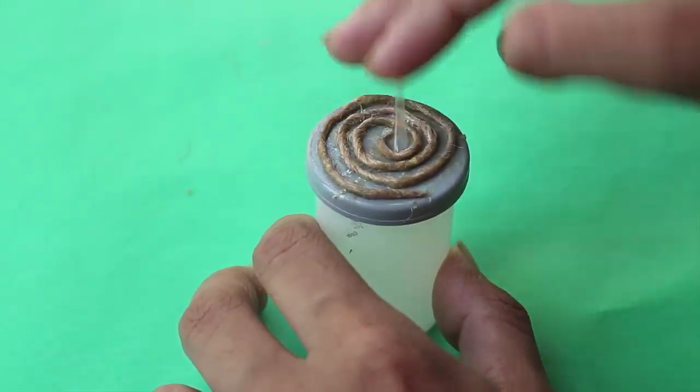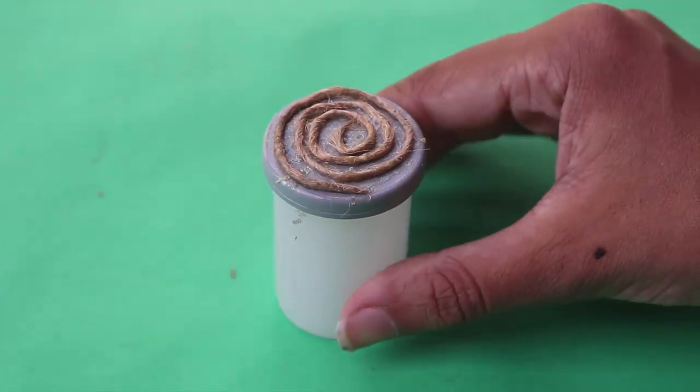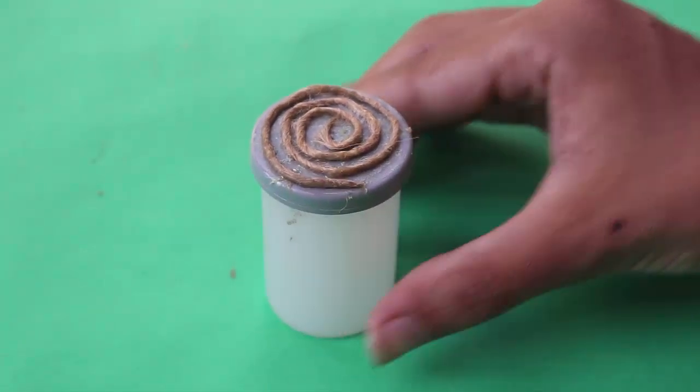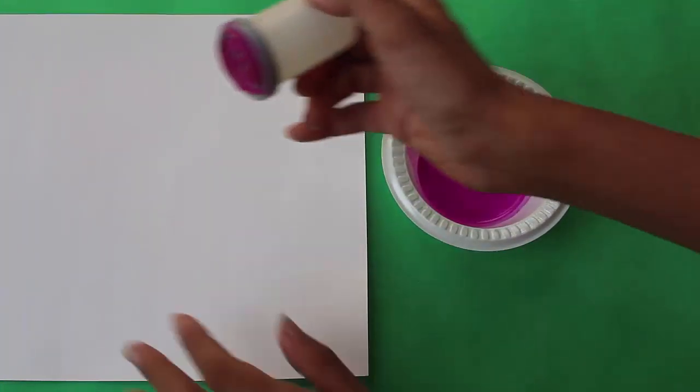Here is our stamp ready. That is the block needed for the block printing. Now you have to apply some of the color and take a print of it.